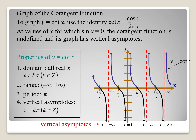For the cotangent function, it's the reciprocal of tangent: cosine over sine. So the vertical asymptotes occur where sine equals 0, at multiples of pi — 0, pi, 2 pi, and so on. The range is negative infinity to infinity, and the period is pi. One key difference from tangent: cotangent is a decreasing function, going down from left to right. A negative cotangent would be increasing instead, so pay attention to that orientation when graphing.